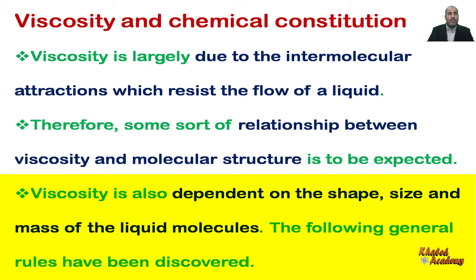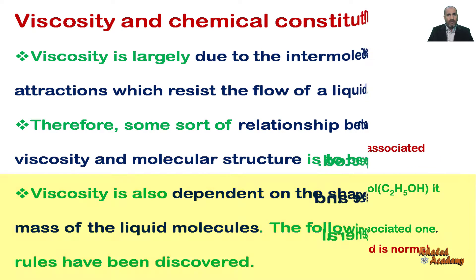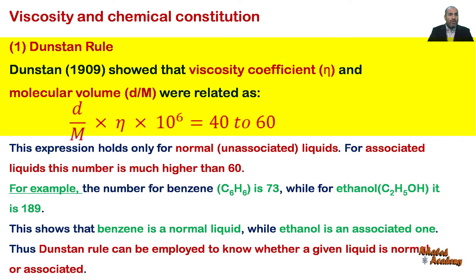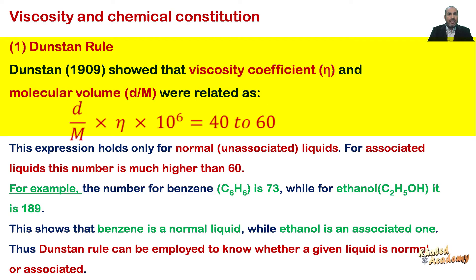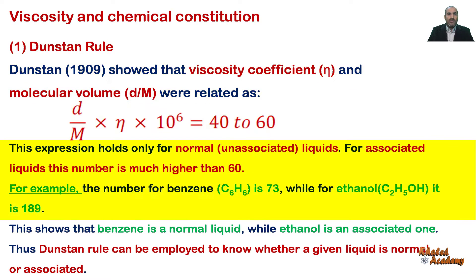The following general rules have been discovered. The first rule is Dunstan rule. In 1909, Dunstan showed that the viscosity coefficient Eta and the molecular volume D divided by M were related as: (D / M) × Eta × 10⁶ = 40 to 60.